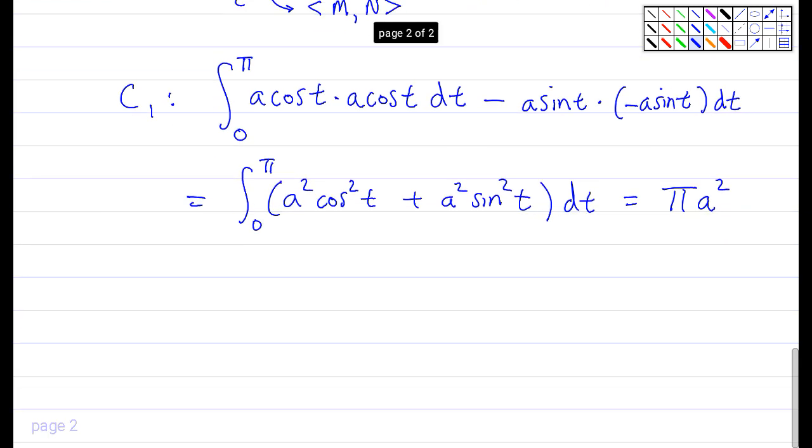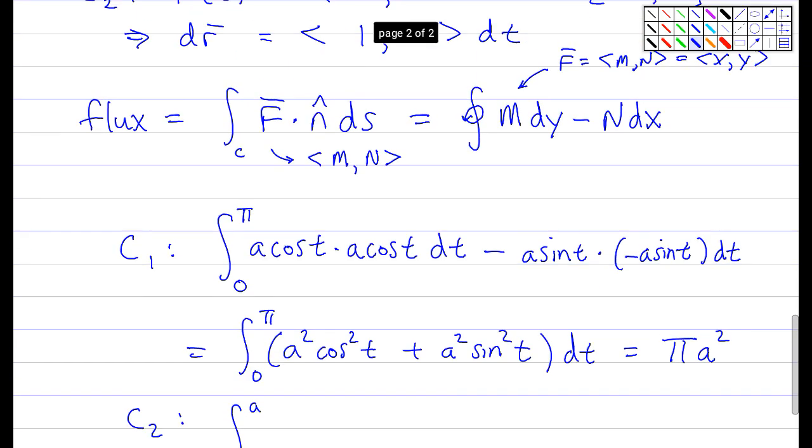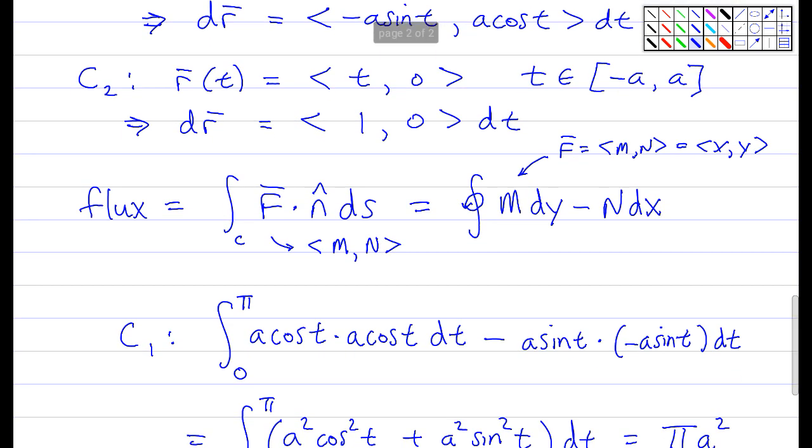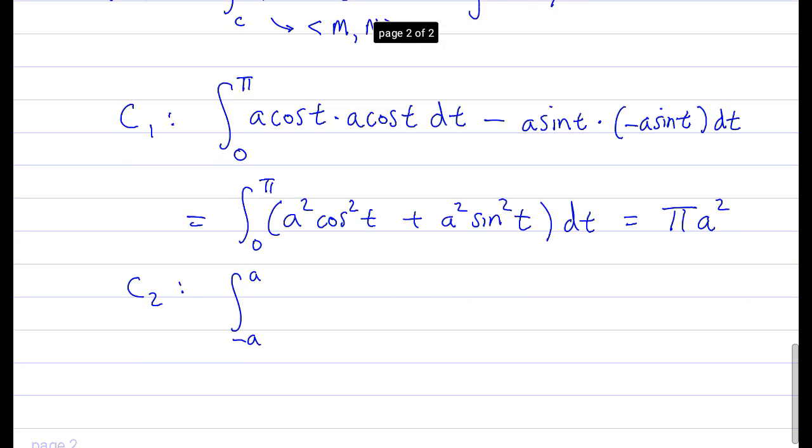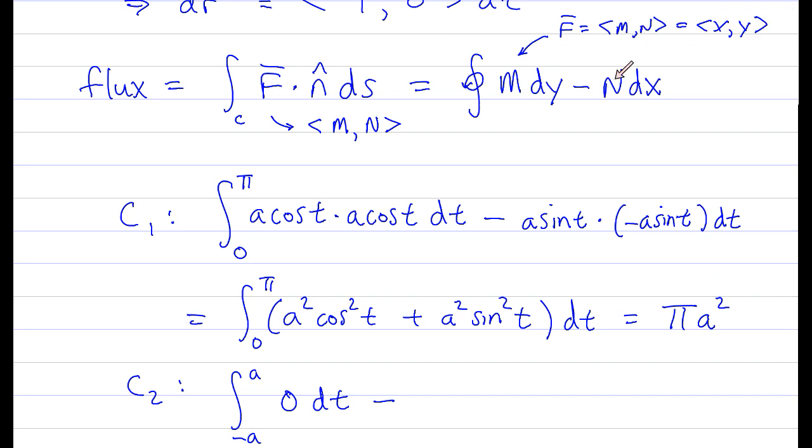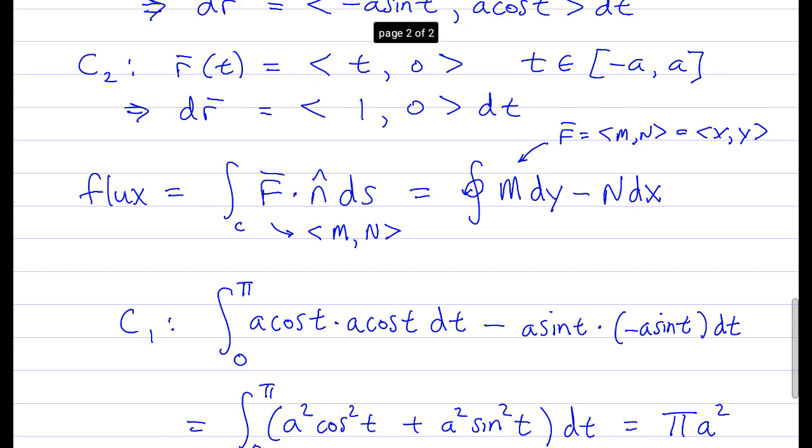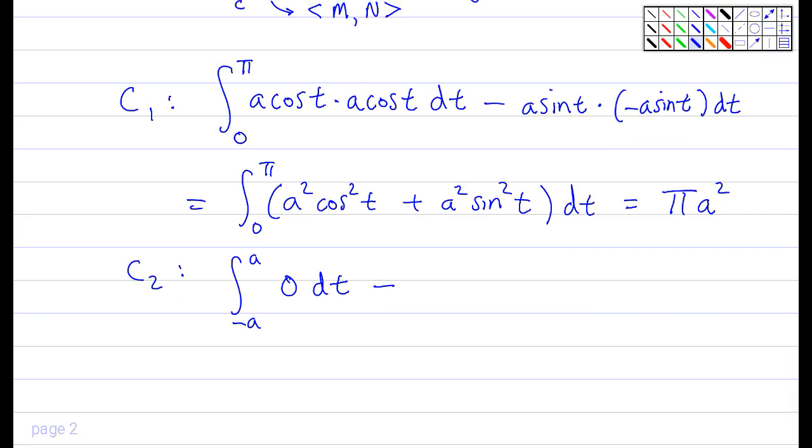We're not done yet. Getting there. We're going to go minus A to A. So we're using C2 now. So we're going to have M, which is X. Which is now, in this case, just going to be T. D Y is this thing right here. So we're actually just going to take T times zero DT. Well, that's not very interesting. That's just going to be zero. Zero DT. Minus. Now we need to do N DX. N is Y. So N is zero. DX is DT. So once again, we get another zero DT. So this thing is just zero.